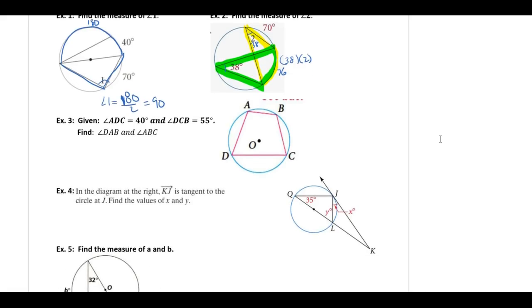Example 3: Angle ADC is 40 degrees, angle DCB is 55 degrees. Find angle DAB and angle ABC. Angle DAB is this angle here. A and C are opposite angles, so DAB is 180 minus 55, which is 125 degrees. Angle ABC: these are opposite angles, so ABC is 180 minus 40, which is 140 degrees.